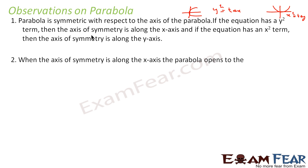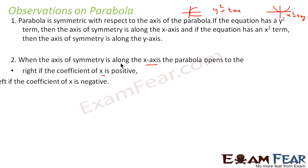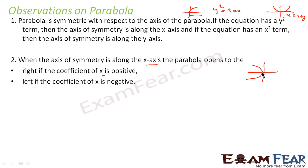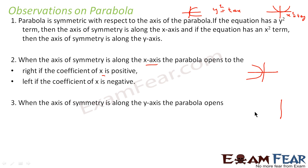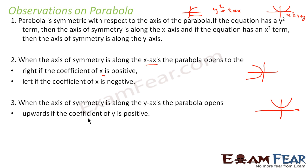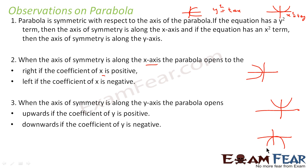Also, when the axis of symmetry is along the x-axis, the parabola opens to the right if the coefficient of x is positive, and opens to the left if the coefficient of x is negative. Similarly, when the parabola is symmetric along the y-axis, it opens upwards if y has a positive coefficient and opens downward if y is negative. So these are the four cases observed.